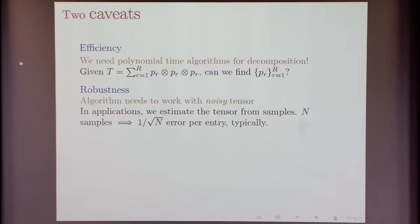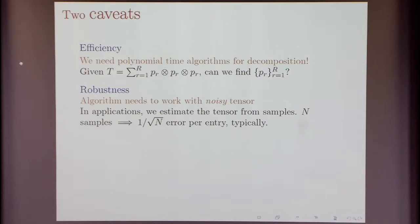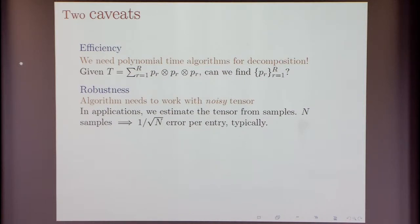Another very important thing in applications is that our algorithm needs to be robust — it needs to be able to work with a noisy tensor. In the topic model, we estimated each entry of the tensor by looking at a whole bunch of documents. If you take n samples of your documents, then typically you'll have a 1/√n error per entry of the tensor. In practice, we are only allowed a small enough number of samples, so dealing with error is important.